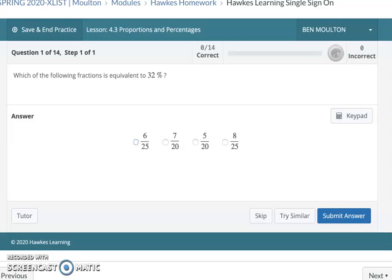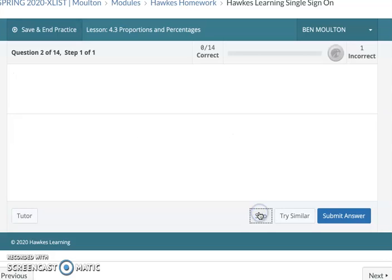This first one, which of the following fractions is equivalent to 32%? What I would do is just write it as 32 over 100 and then reduce the fraction and you'll have your answer. Moving on.